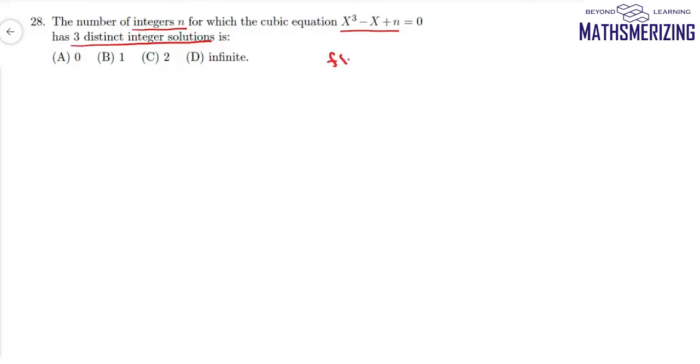So if I take this as some function f(x), I'll write this as x³ - x + n. And if I differentiate, I'll write f'(x) as 3x² - 1. And if I put it equal to 0, I'll get x as plus or minus 1 by root 3.